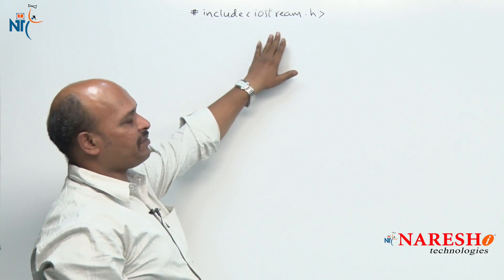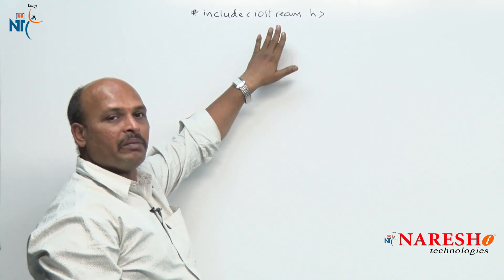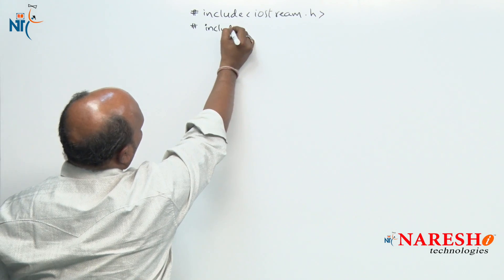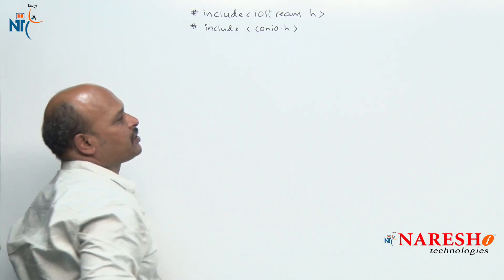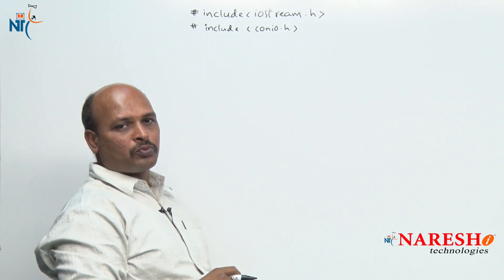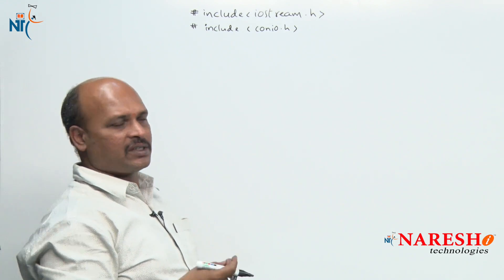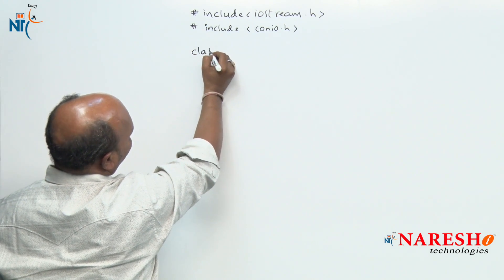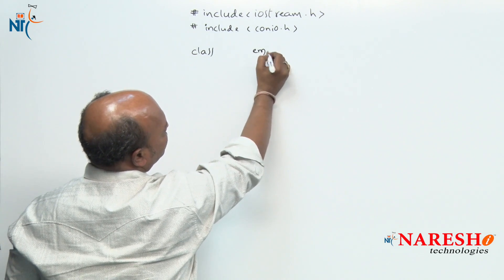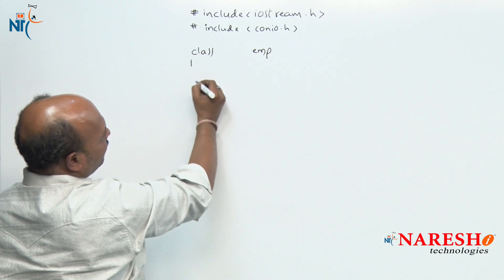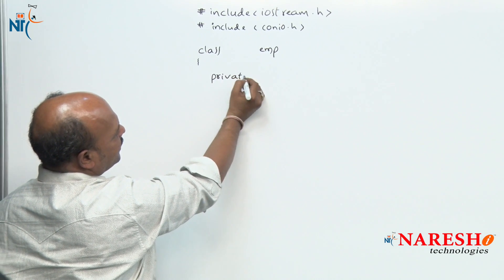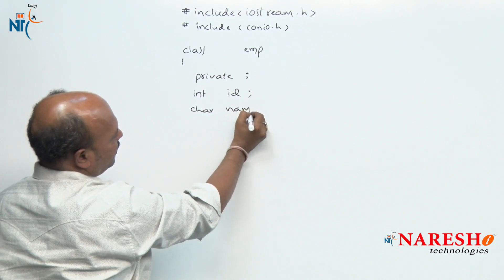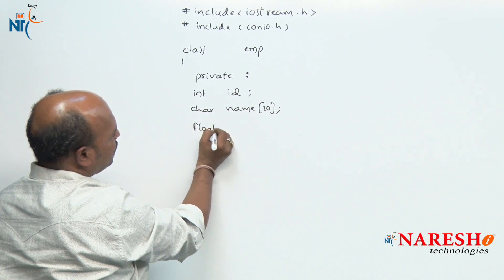First, the common header file iostream.h for managing input and output operations in C++. Next, hash include conio.h to manage the console input and output operations like clrscr and getch. Now I am going to declare a class. There is a class called Employee. An employee has data members like int id, char name, and float sal.